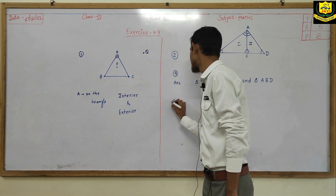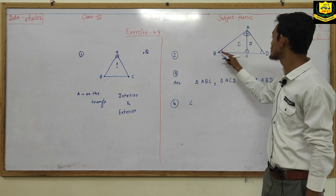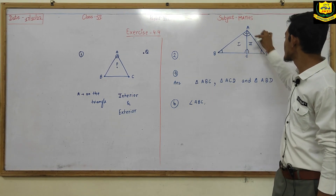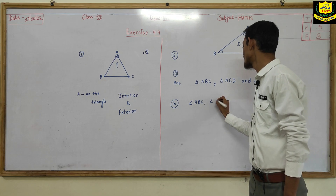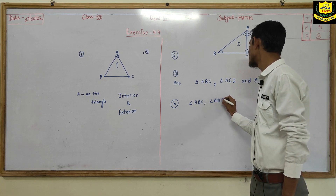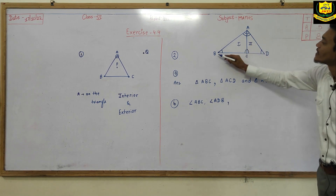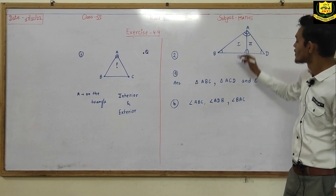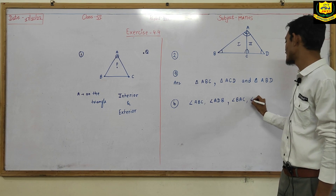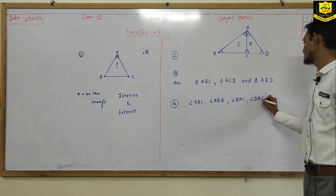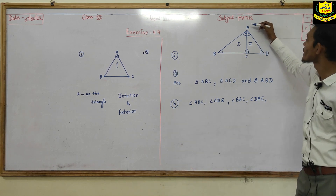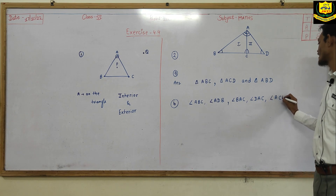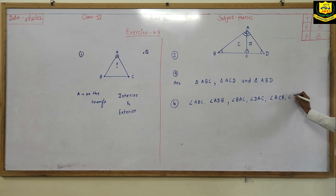So the seven angles are: first, angle ABC; second, angle ADC; third, angle BAC; fourth, angle ACD. These are four angles so far.